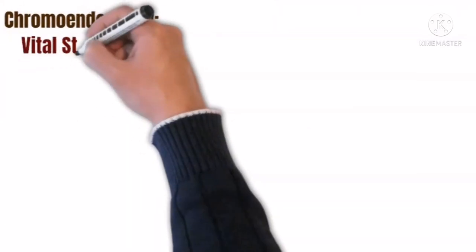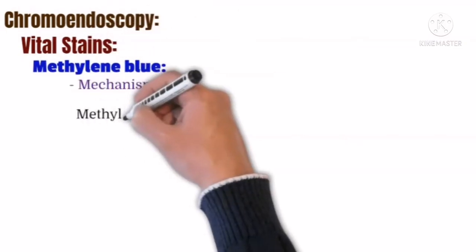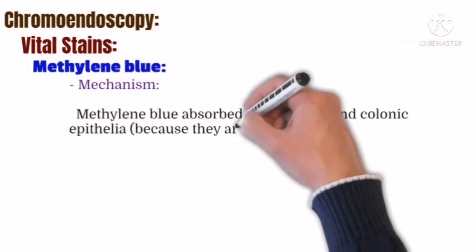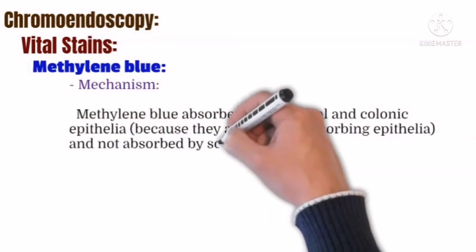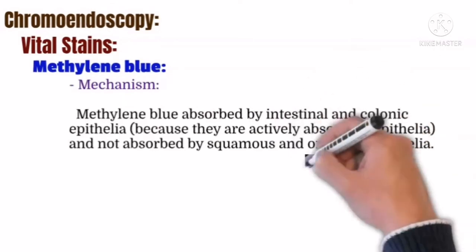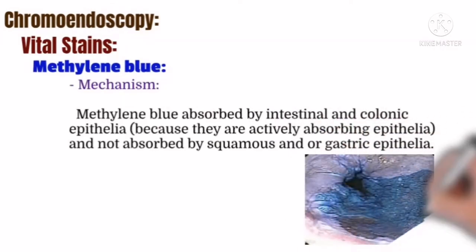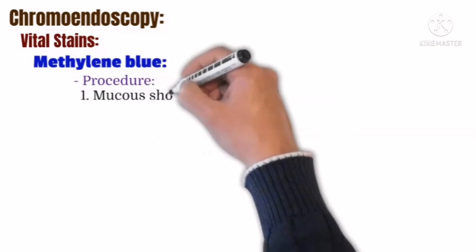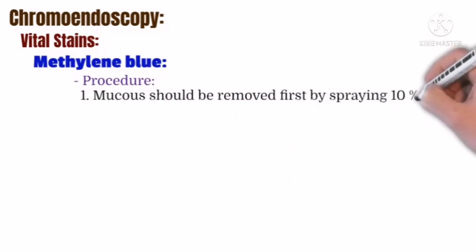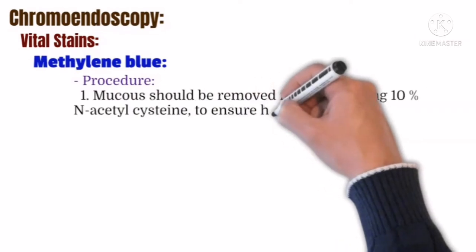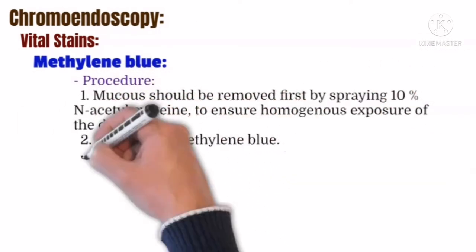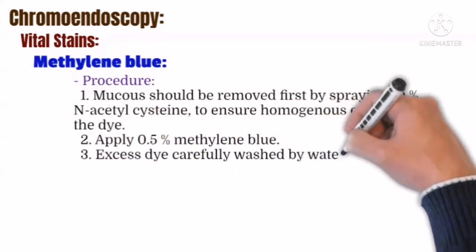The second vital stain is methylene blue. Methylene blue is absorbed by intestinal and colonic epithelium because they are actively absorbing epithelium, and not absorbed by squamous and gastric epithelium. Before application, the mucosa should be prepared by spraying 10% N-acetylcysteine to ensure homogenous exposure of the dye. Apply 0.5% methylene blue, and excess dye is carefully washed off with water.